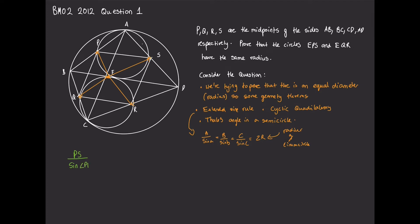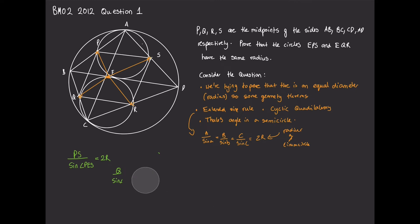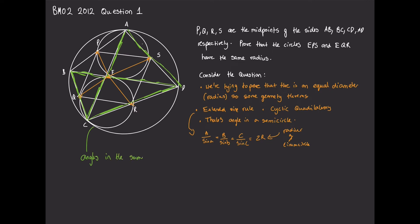We'll write down our side length PS and the angle opposite to it, angle PES, and say that equals 2r, where r is the radius of the circumcircle of triangle PES — that is, circle EPS. The same applies for triangle QER. Since we know PS equals QR, for PS/sin(PES) = 2r and QR/sin(QER) = 2r to both give the same r, we need sin(QER) = sin(PES). This happens when angles QER and PES are supplementary or equal. So we need to do some angle chasing to prove this.